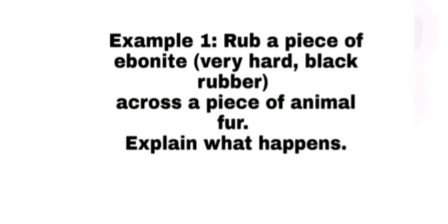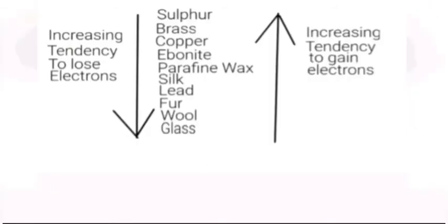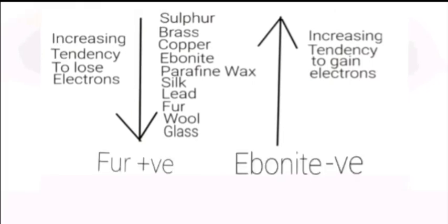Examples of friction: rub a piece of ebonite across a piece of animal fur. The fur doesn't hold its electrons as strongly as ebonite. So some of the electrons from the fur are ripped off the fur and stay on the ebonite. Now fur has a slightly positive charge because it lost its electrons, and ebonite has slightly negative charge because it gained electrons.